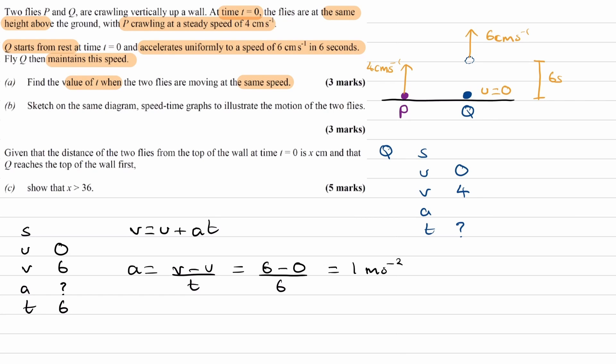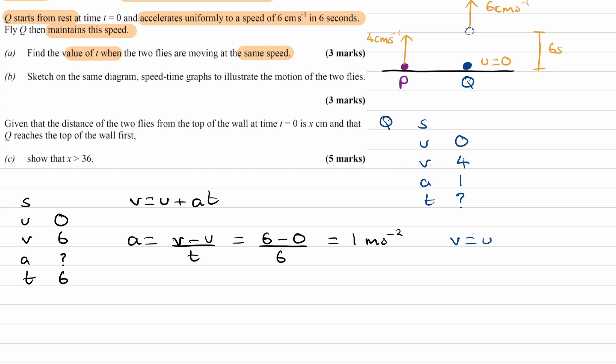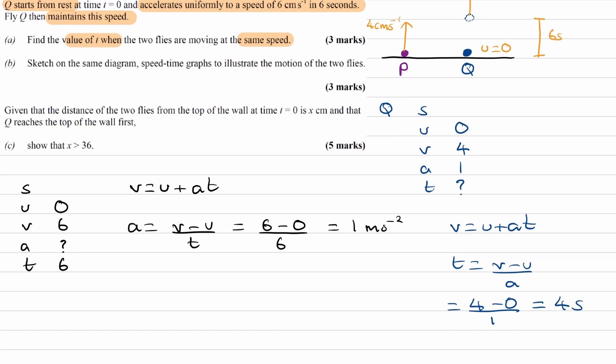Okay, so that's our acceleration, 1. And now from these quantities, we can then work out what T is. So using V equals U plus AT again. T is then V minus U over A, which is 4 minus 0 over 1. So it takes 4 seconds for the two flies to be moving at the same speed.